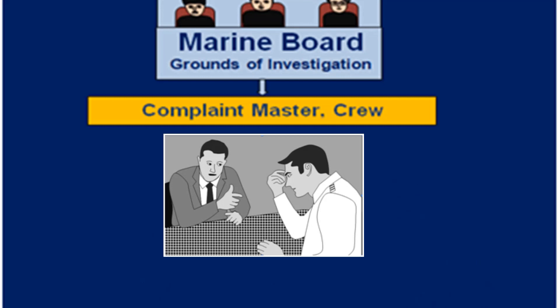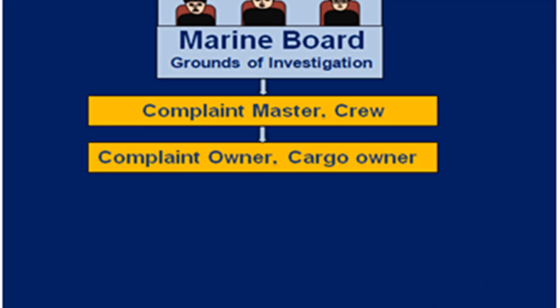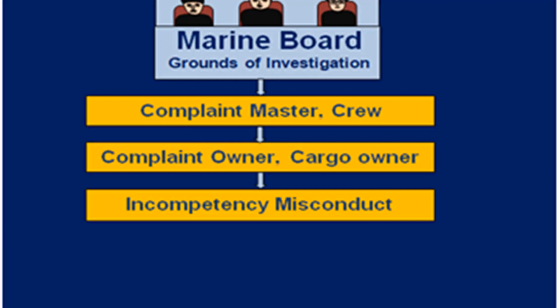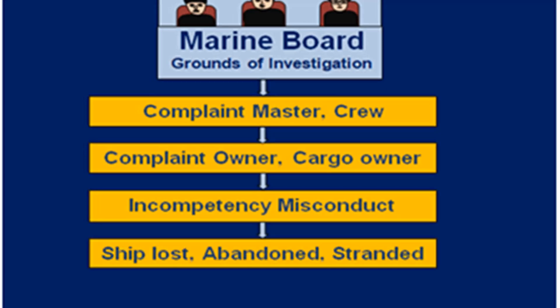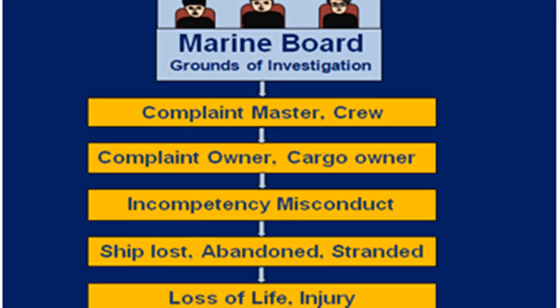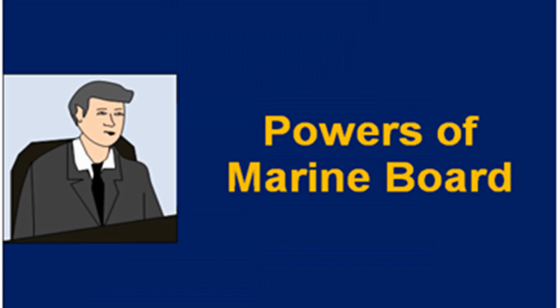Ground one: a complaint is made by the master or any member of the crew of an Indian ship requiring immediate investigation. Ground two: the interest of the owner of the Indian ship or the owner of the cargo is involved. Ground three: an allegation of incompetency or misconduct against the master or any of the officers. Ground four: an Indian ship is lost, abandoned or stranded nearby. Ground five: any loss of life or any serious injury has occurred to any person.